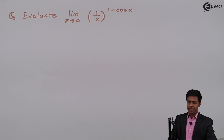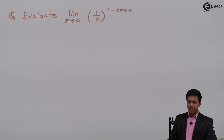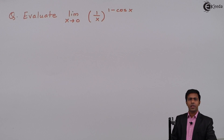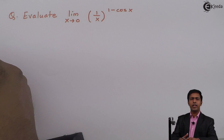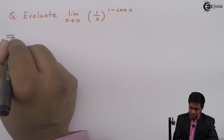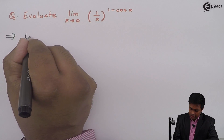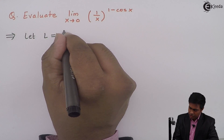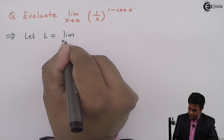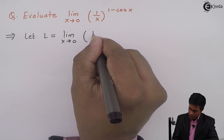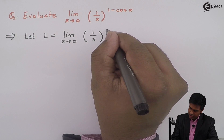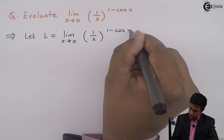Hello everyone. In this problem we have to evaluate the limit as x tends to 0 of (1/x) raised to the power (1 minus cos x). Before starting with the solution, I will assume the given limit as L. So let L equal to limit x tends to 0 of (1/x) raised to (1 minus cos x).